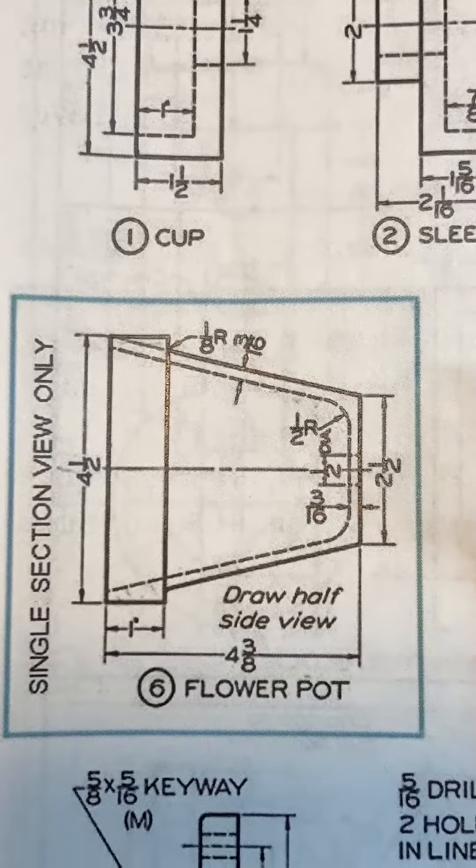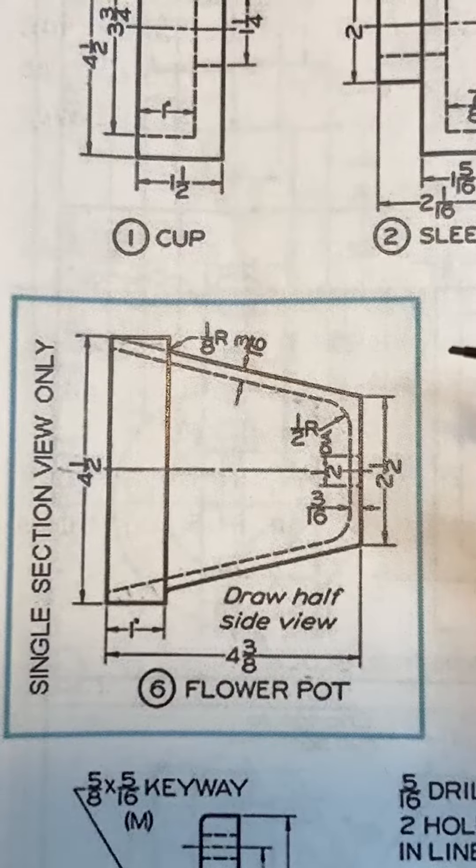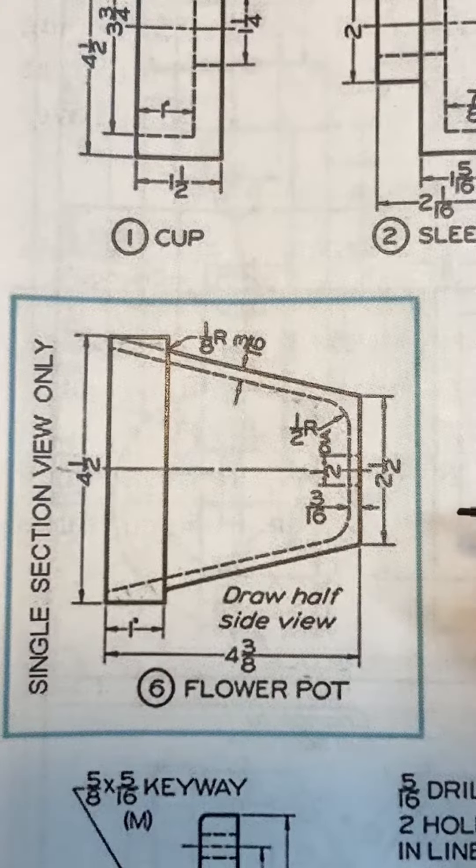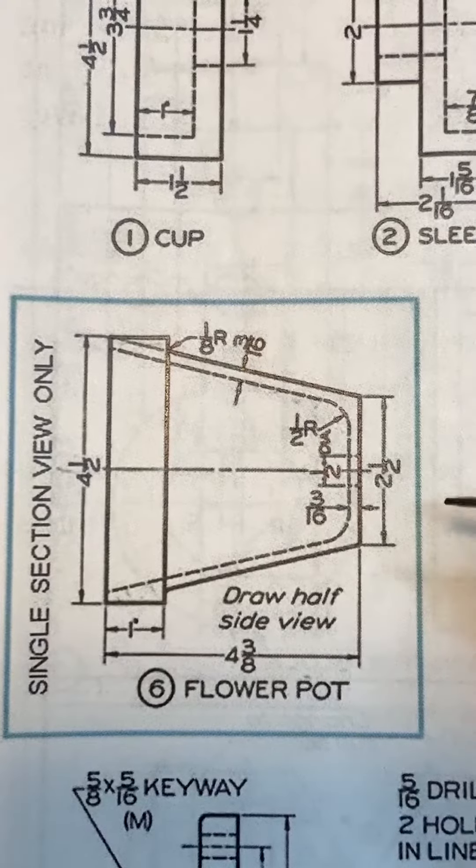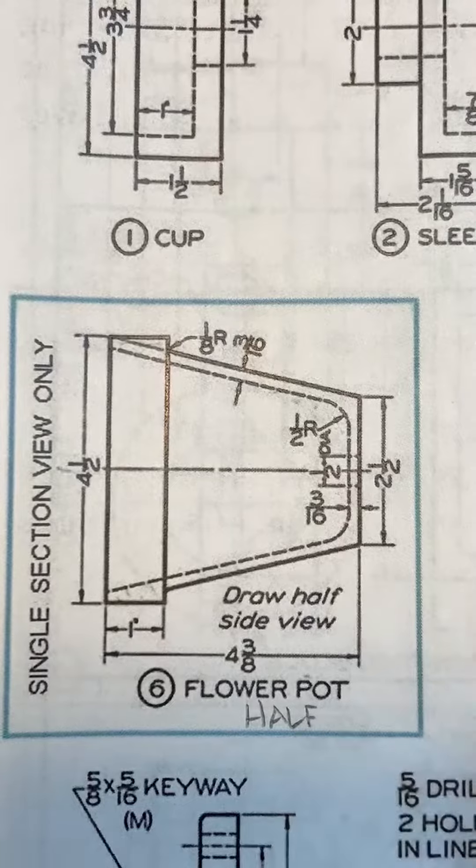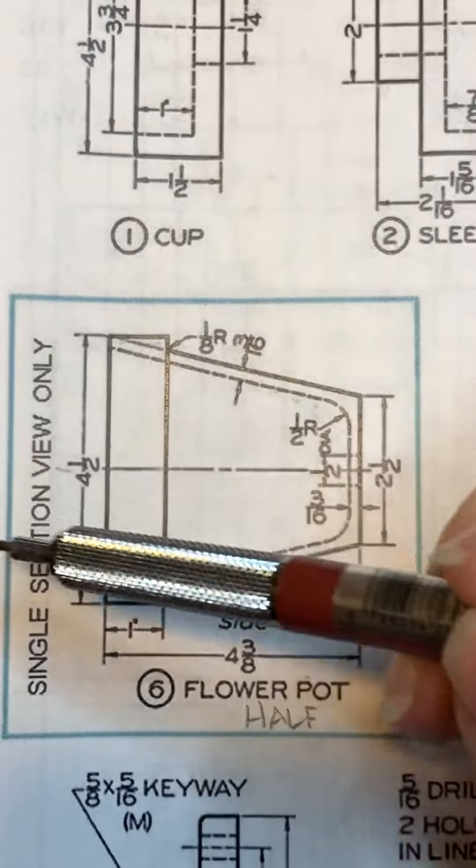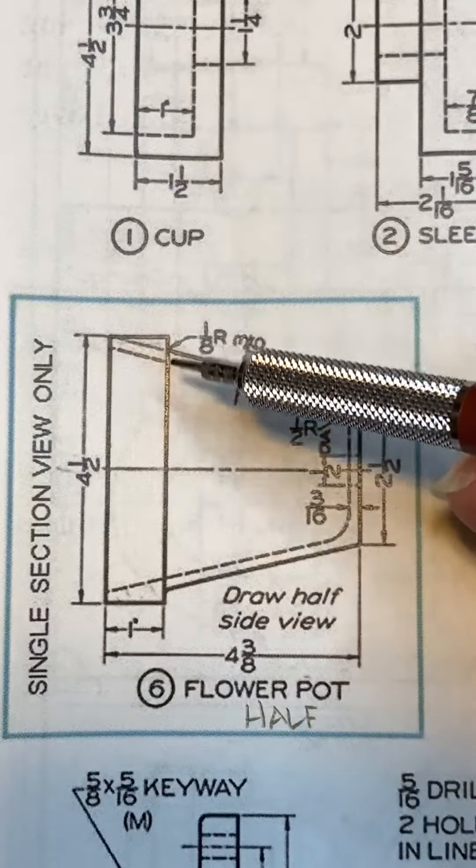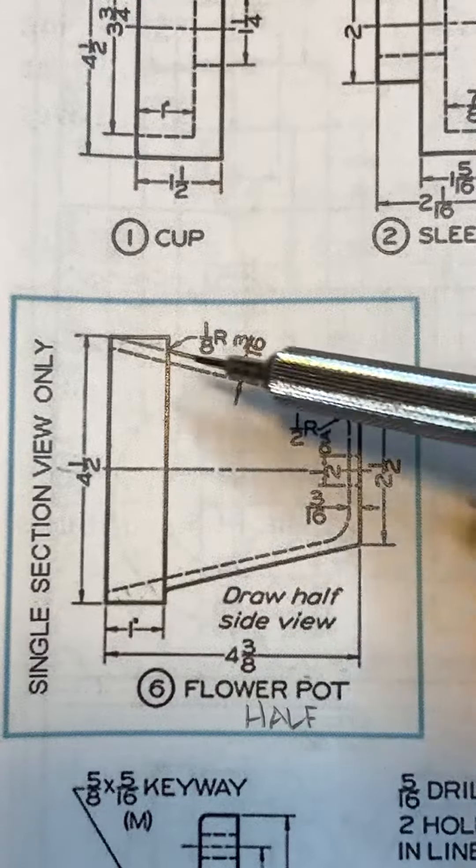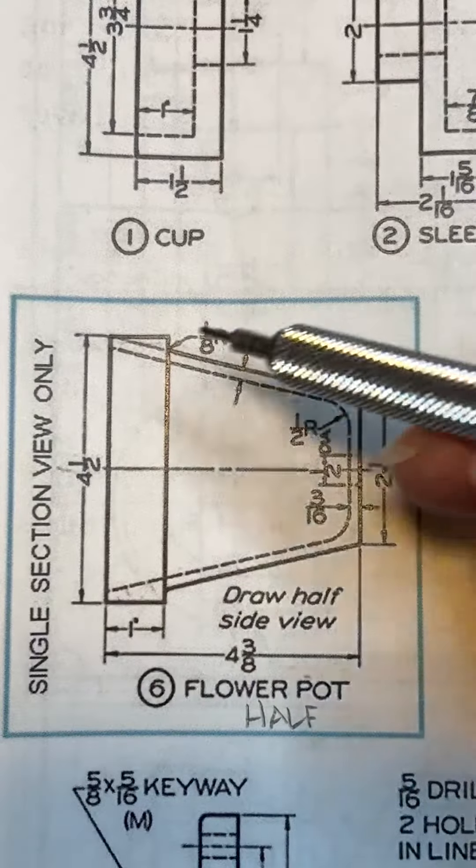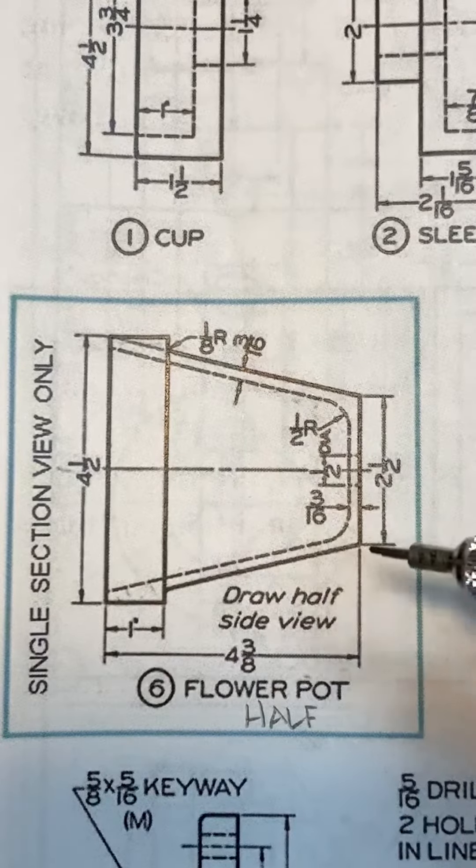This is 1124 number six. For this part, I only want the half section view. So this is going to be a half section. You are not going to draw the front view. You're only going to draw this part, this flower pot, and you're going to turn this view into a half section.